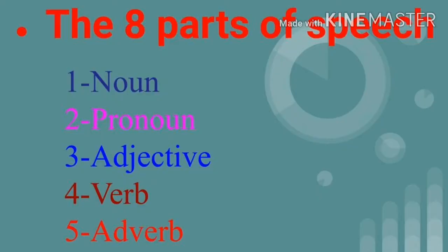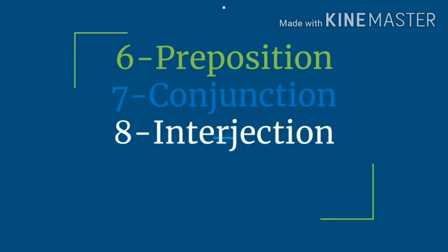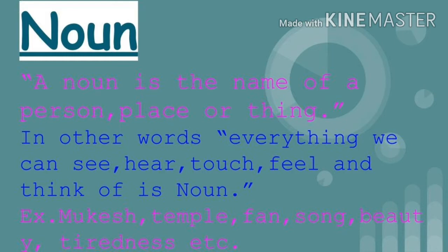In total, there are eight parts of speech: number one, noun; number two, pronoun; number three, adjective; number four, verb; number five, adverb; number six, preposition; number seven, conjunction; number eight, interjection. These are the eight types of parts of speech into which words are divided. Now let's know the definition of these parts of speech one by one.